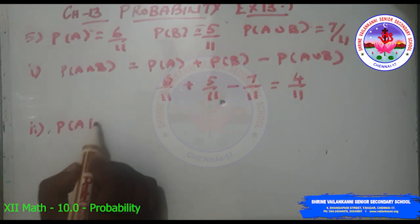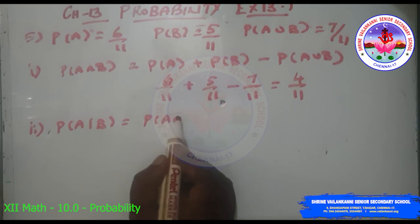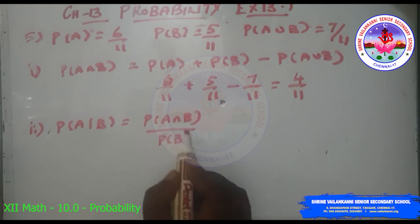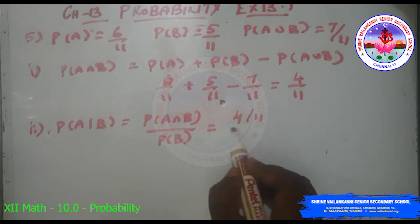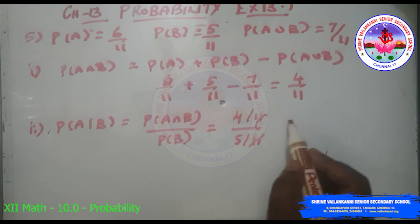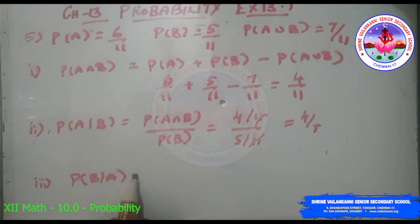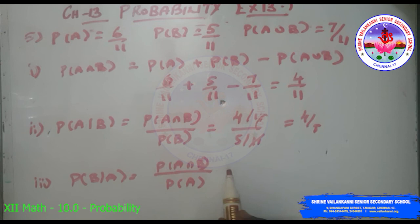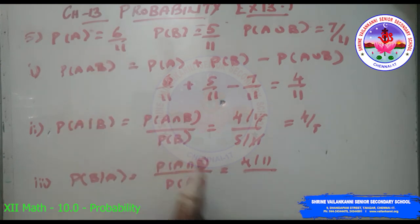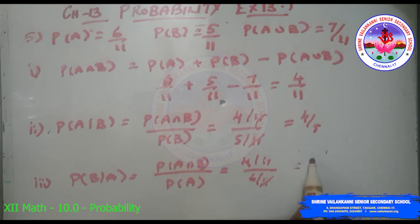Second subdivision: P(A|B) = P(A∩B)/P(B) = (4/11)/(5/11) = 4/5. Third subdivision: P(B|A) = P(A∩B)/P(A) = (4/11)/(6/11) = 4/6 = 2/3.